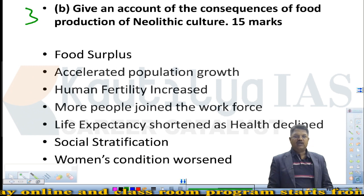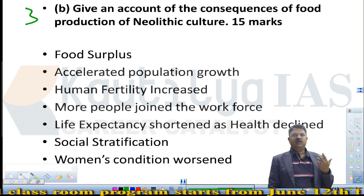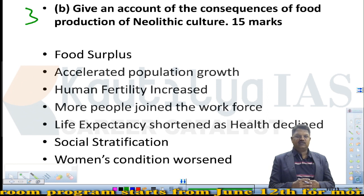Friends, let us see question number 3b, which was asked for 50 marks: give an account of the consequences of food production of Neolithic culture. This is almost like a straightforward question, but it needs a bit of three-dimensional analysis — an anthropological kind of explanation wherein the Neolithic revolution has actually altered the way of human life.